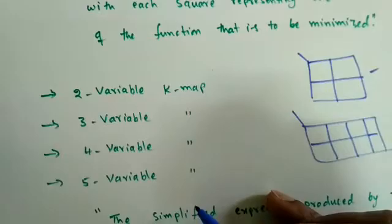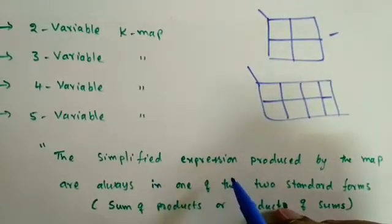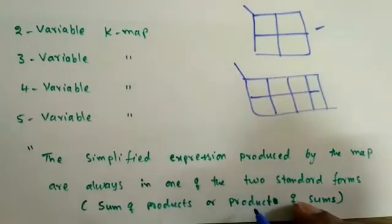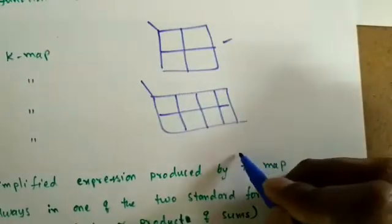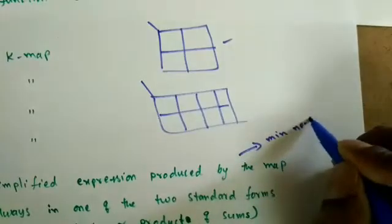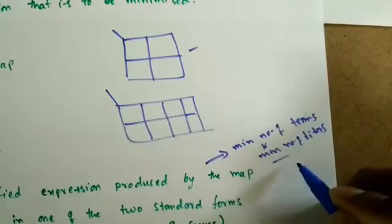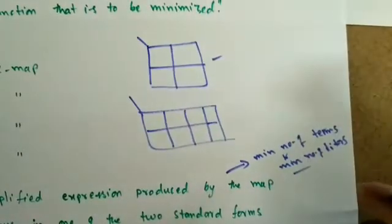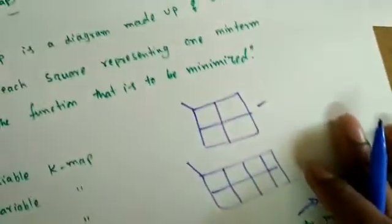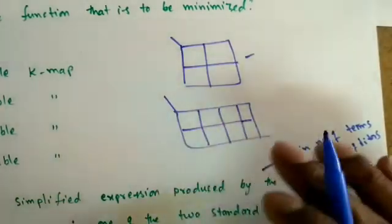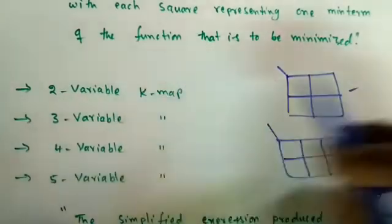The different types of K-maps are two-variable, three-variable, four-variable, and five-variable K-maps. The simplified expression produced by the map is always in one of two standard forms: SOP (sum of products) or POS (product of sums). The simplified version will contain a minimum number of terms, minimum number of literals, and therefore require a minimum number of gates with minimum inputs per gate. In the next lecture, we'll start the two-variable K-map.